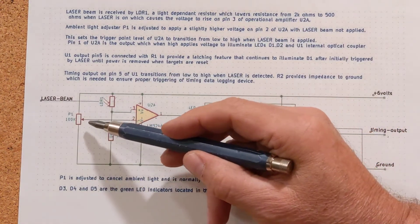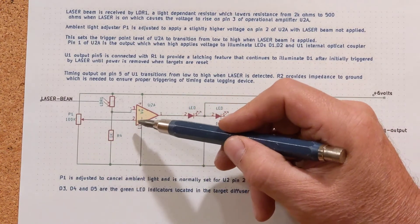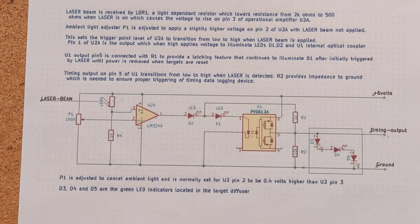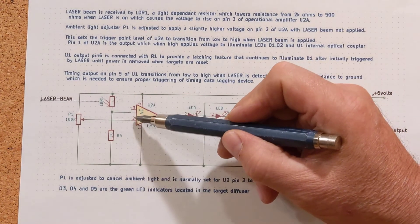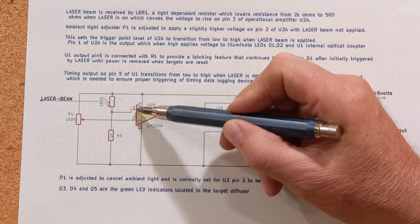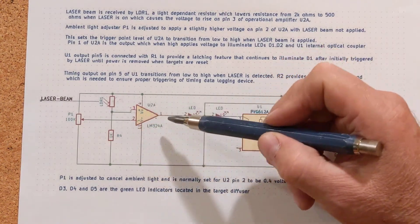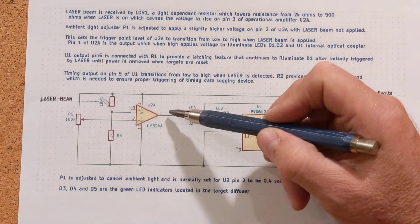What you want to do is adjust the potentiometer so the input on pin 2, the negative input of the op amp, is about four tenths higher than the potential on pin 3. That keeps, under that condition, the op amp at a low output here.